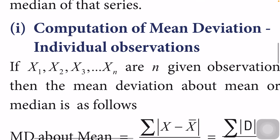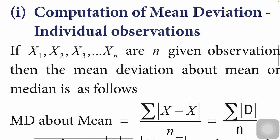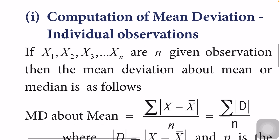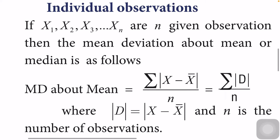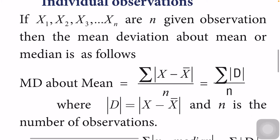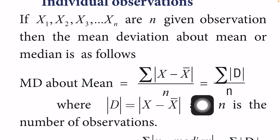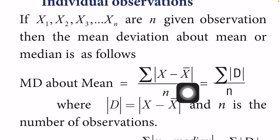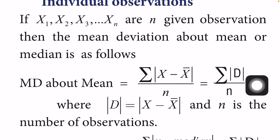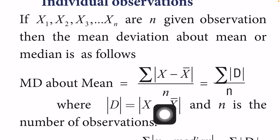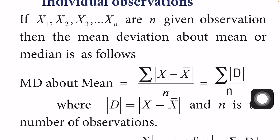Let us learn how to compute the mean deviation. For individual observations, that means ungrouped data, mean deviation about mean is sigma of (x minus x-bar) divided by n, where x-bar is the mean. That is, sigma modulus D divided by n, where sigma modulus (x minus x-bar) divided by n equals sigma modulus D divided by n.